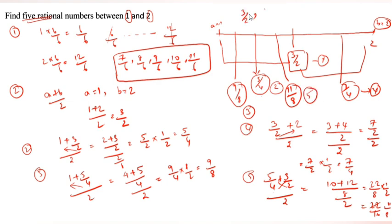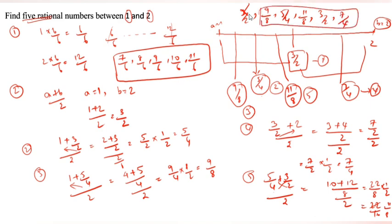So, we write the 5 rational numbers in order: 9 by 8, 5 by 4, 11 by 8, 3 by 2, 7 by 4. These are the five rational numbers. If you want six, calculate between 3 by 2 and 7 by 4. For seventh, take 7 by 4 and 2, and calculate in between.